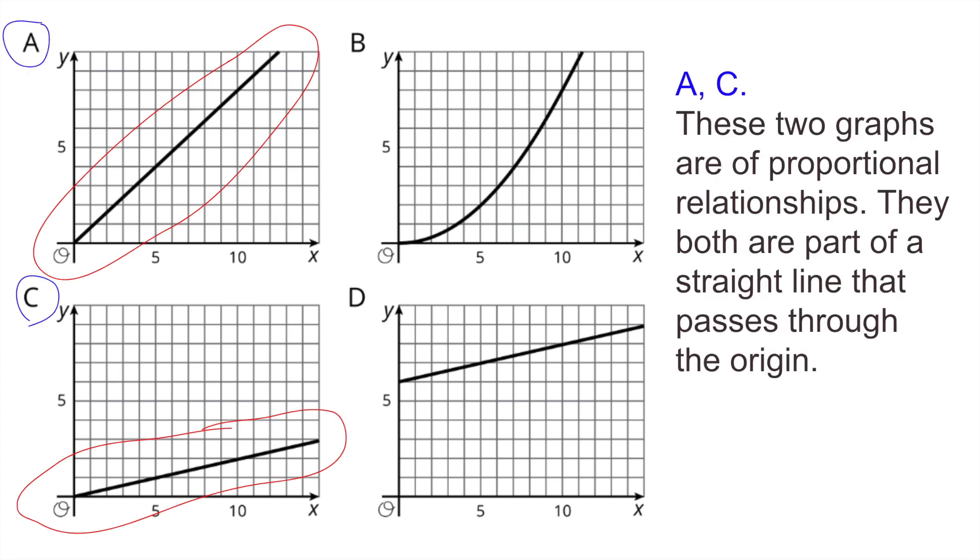Graphs A and C. These two graphs are of proportional relationships. They both are part of a straight line that passes through the origin. B is a curved line passing through the origin. D is a straight line but it passes through the y-axis above the origin.